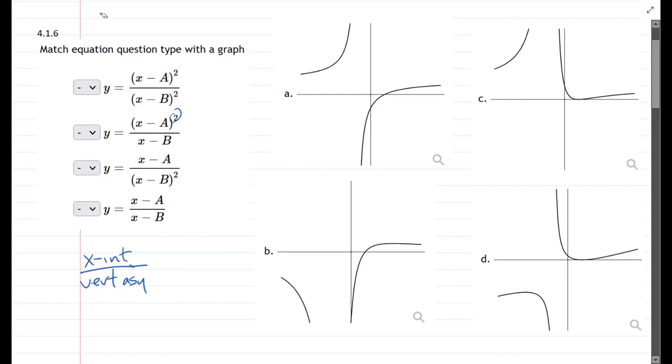So even powers are bouncing, odd powers are crossing. I'm writing bounce bounce because they're both squared power.